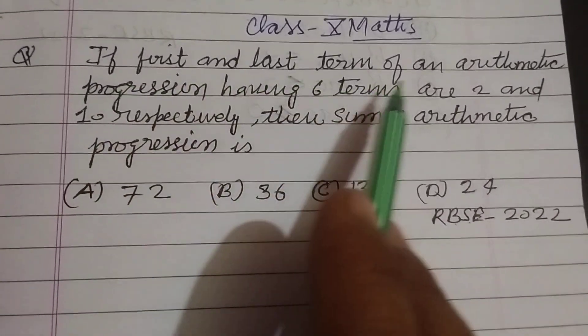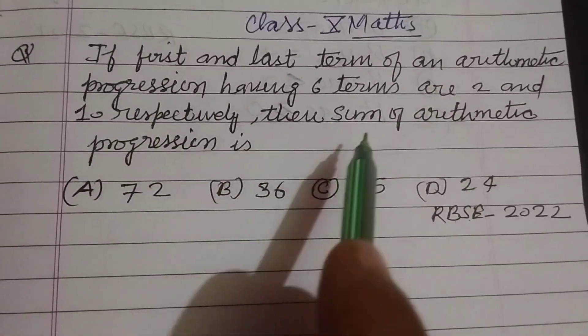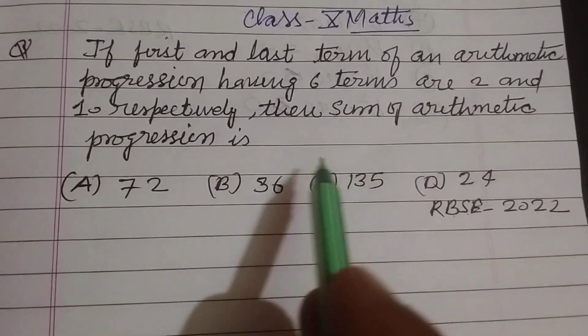If first and last term of an arithmetic progression having 6 terms are 2 and 10 respectively, then the sum of arithmetic progression is.